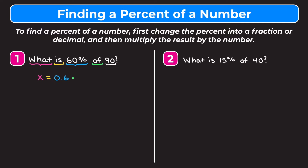Basically what we do is what it says at the top of the screen: change the percent into a fraction or decimal — we changed 60% into 0.6 — and then multiply it by the number we're finding the percent of, which is 90. Now I want to simplify the right side, so I have to multiply 90 by 0.6. I'll use stacked multiplication, but you can also use box if you prefer. When multiplying decimals, just ignore the decimal point at first and I'll show you how to place it at the end.